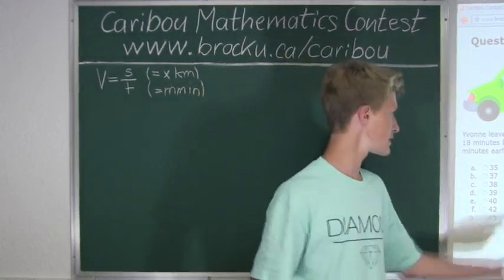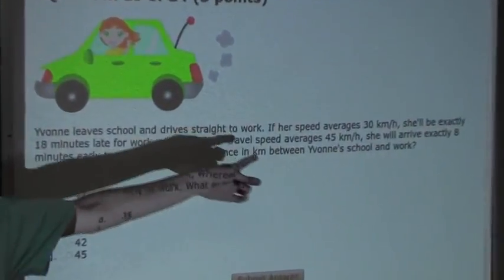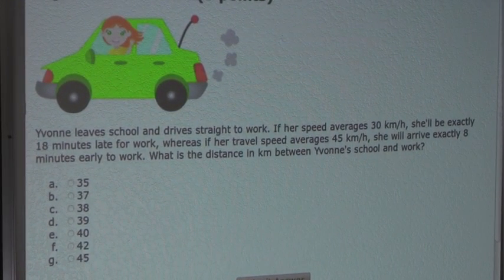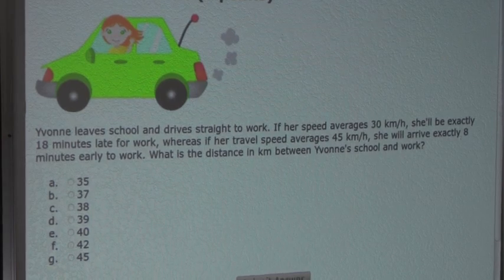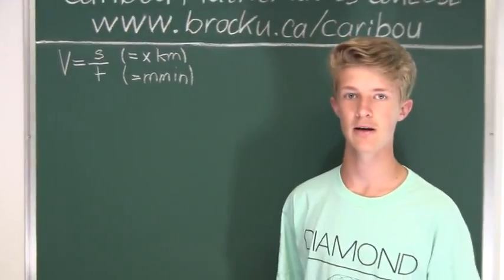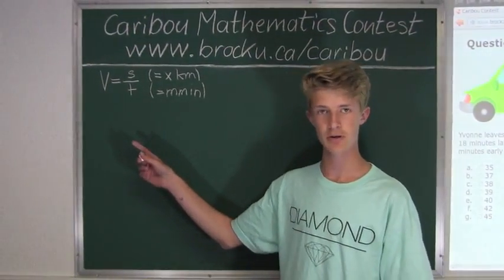Now let's see what the question tells us. The first bit of information is that if the speed averages 30 kilometers per hour, then she'll be exactly 18 minutes late for work. So we know that the velocity is 30 kilometers per hour, so to have everything in minutes, we will write it as 30 kilometers per 60 minutes.